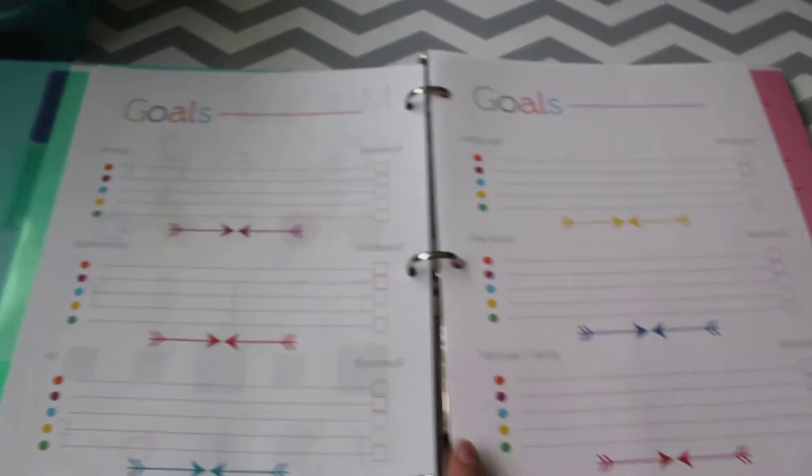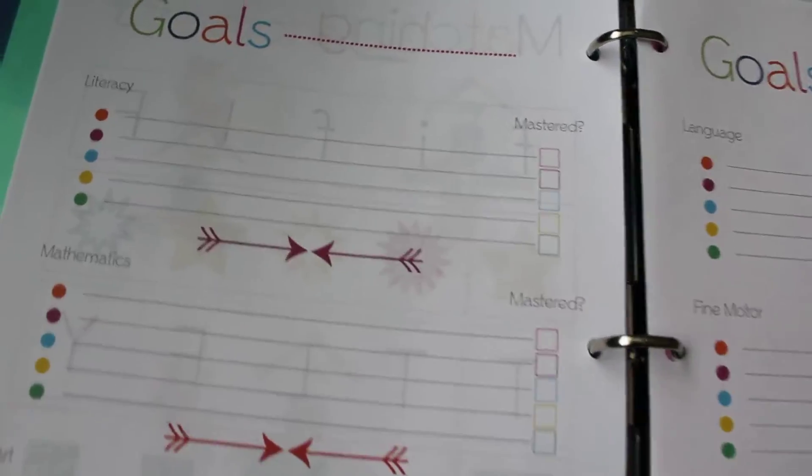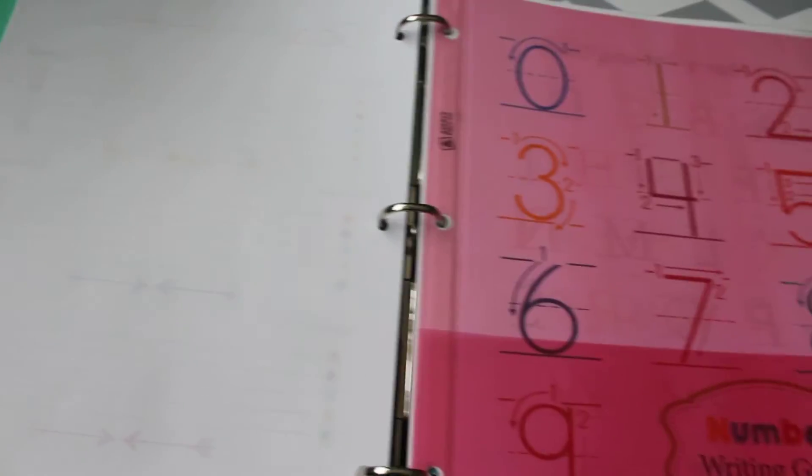Then you can add goals which is nice and I think I'll probably keep this in their binders throughout the year. That way I can just be reminded of what we're working toward and getting them ready for kindergarten.